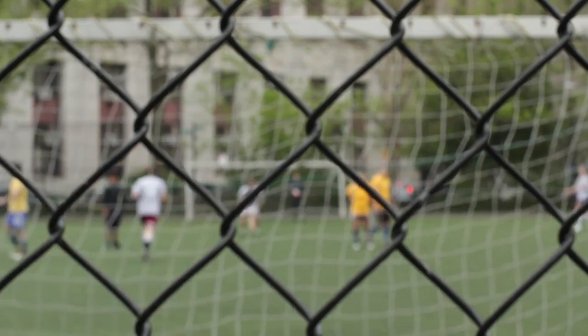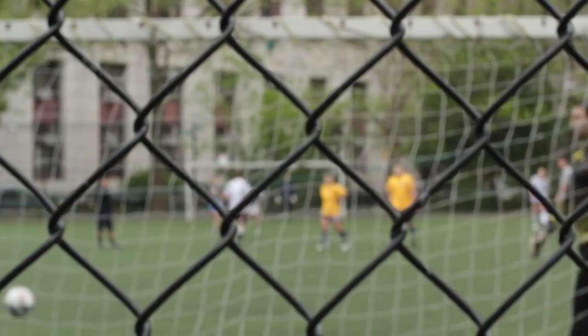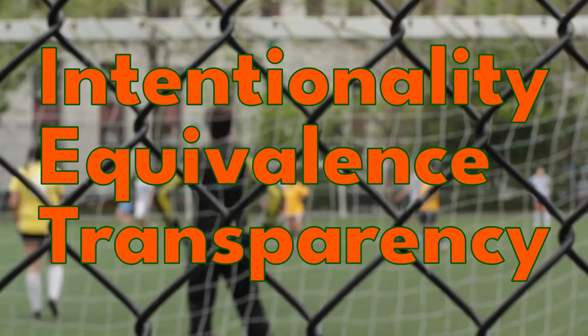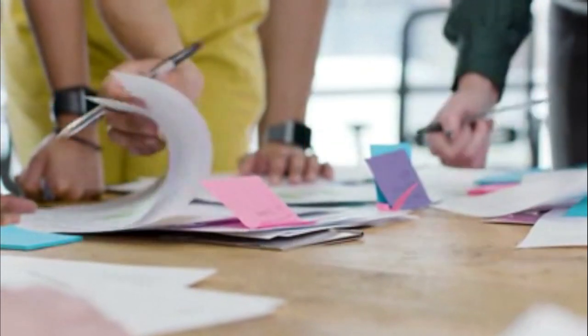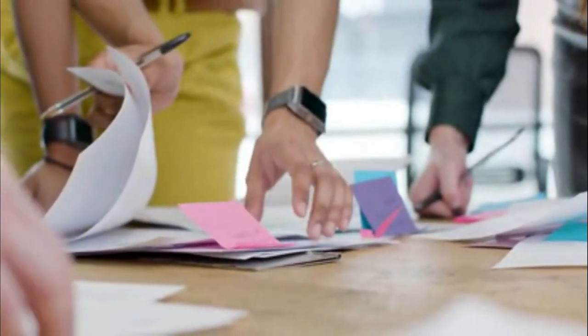In outlining this piece, we divided sociocracy into three key elements: intentionality, equivalence, and transparency. Merged with the cooperative identity, they build a solid framework for wholesome cooperation.